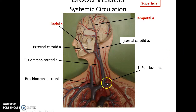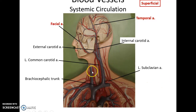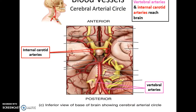The subclavian artery carries blood to the upper limbs. The common carotid arteries carry blood to the head, splitting into the external and internal carotid arteries, which then split into the temporal arteries, facial arteries, and so on. The brachiocephalic trunk splits into the right common carotid artery and the right subclavian artery.